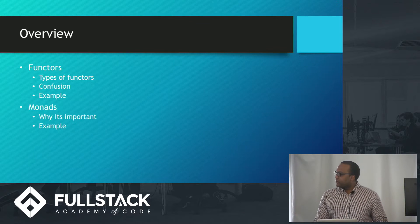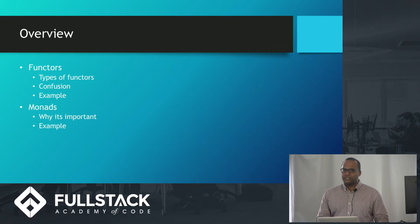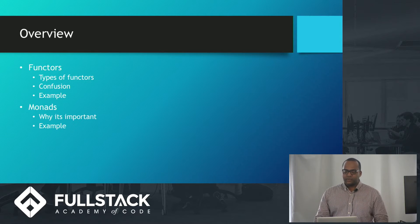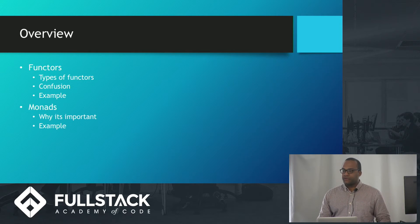Let's get a quick overview of my presentation. First we're going to talk about functors, because before we learn about monads, we've got to learn about functors. We're going to go over types of functors, why there's a little confusion in the community when you're first learning about functors and monads. Then I'm going to show you a few examples. From there we're going to move on to monads, why they're important, why they're interesting to us, and then a few more examples.